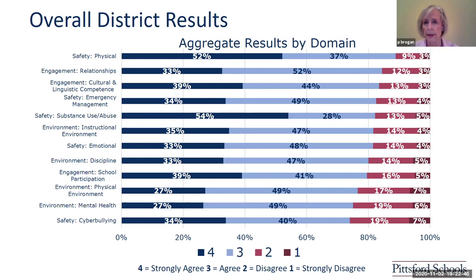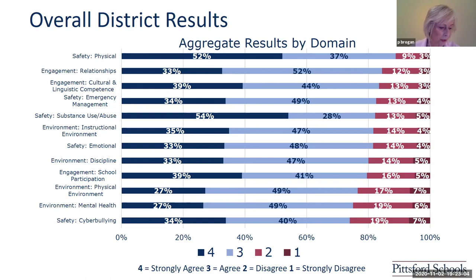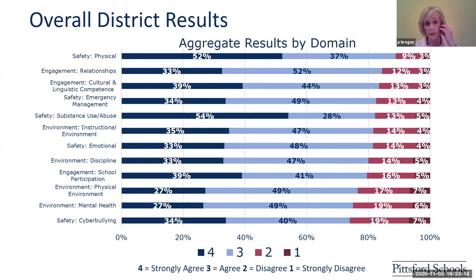These are the overall results. I'd like to share overall results, then dig deeper into the high school, because the IAC felt that while we recognize the importance of early intervening services and systems, some of the findings at the high school led us to recommend to the district to spend more upfront time at the high school level. This is our aggregate data by domain. There are domains and elements in this survey. The Likert scale is listed: 4, 3, 2, 1.